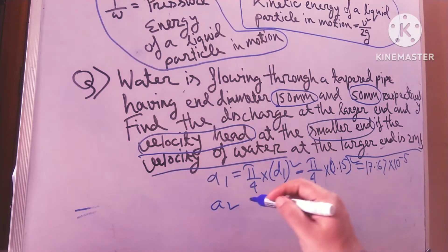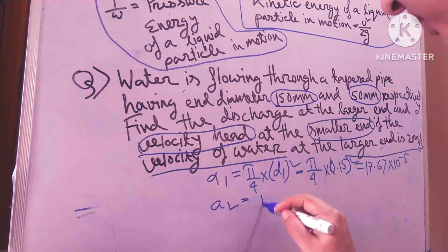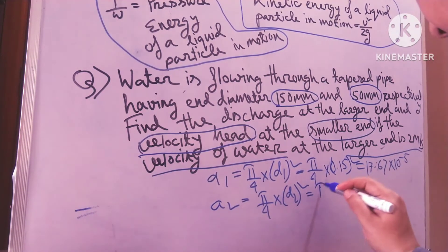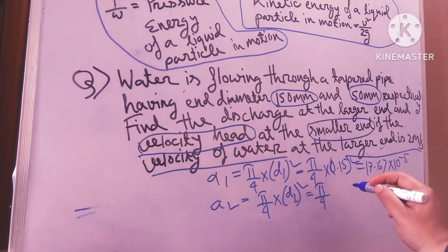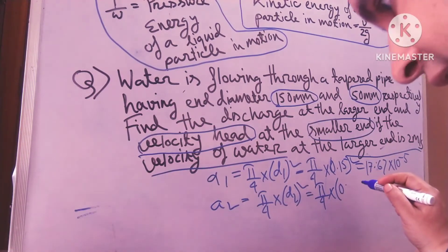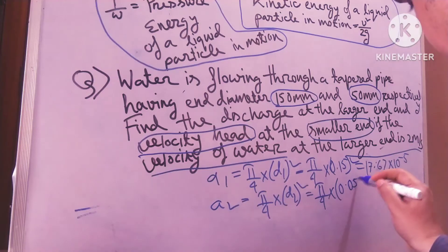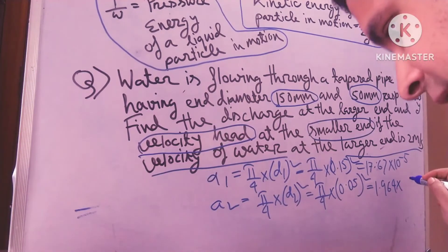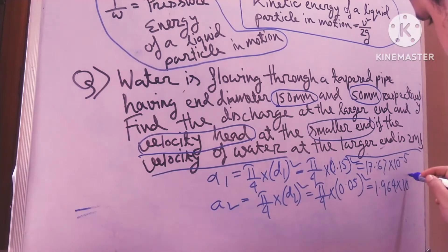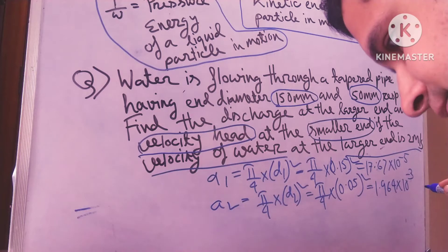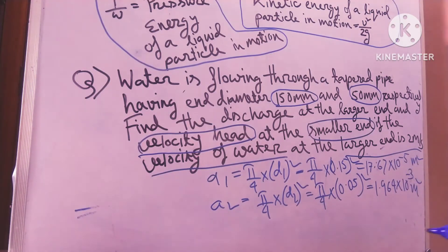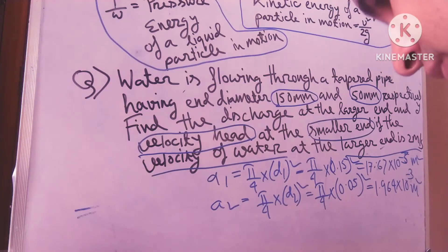Similarly, A2 equals pi by 4 into d2 squared, equals pi by 4 into 0.05 squared — that is 50 mm — so it is 1.964 into 10 to the power minus 3 meter squared. And A1 is 17.67 into 10 to the power minus 3 meter squared.